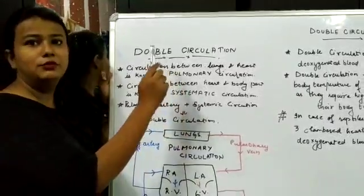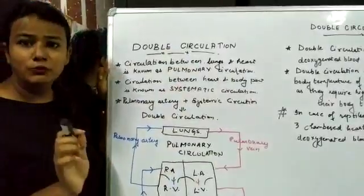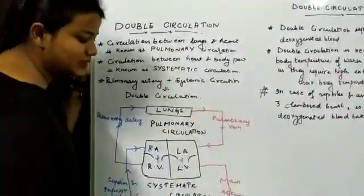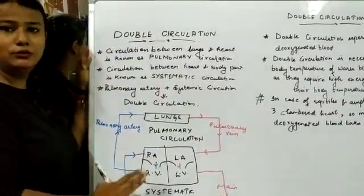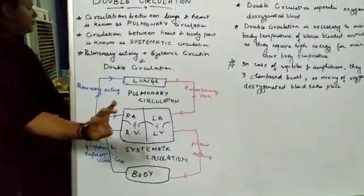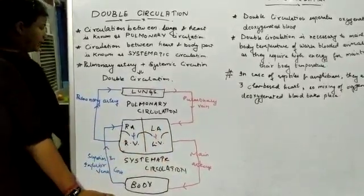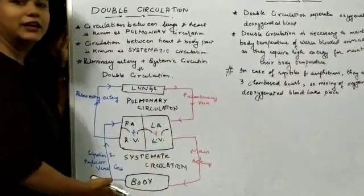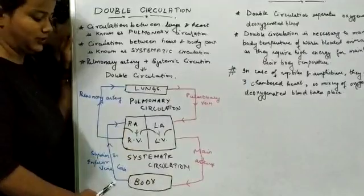Hello students, today we are going to continue the topic Double Circulation. Aap log already human heart padh chuke hain. Toh hum log double circulation discuss karenge. If you want to understand double circulation, the best way is to first cover the human heart topic in a very systematic way using a flowchart. I have uploaded a video 2 days before regarding the working of the heart. I am going to explain the topic again in the form of a flowchart.